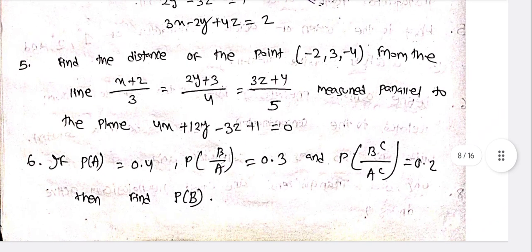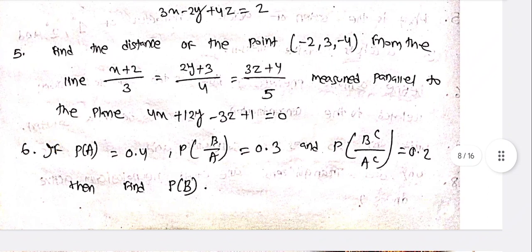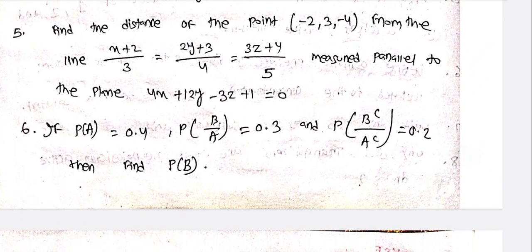Find the distance of the point (-2, 3, -4) from the line (x+2)/3 = (2y+3)/4 = (3z+4)/5.